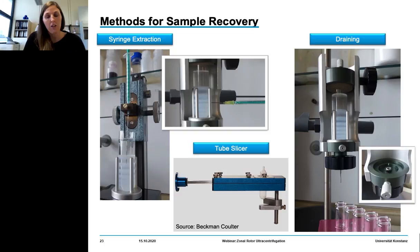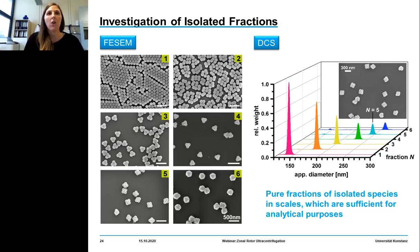It is sometimes better to first use a tube slicer: push a knife through the tube, collect the fluid from the top, remove the knife, and then use your cannula to collect the desired band.